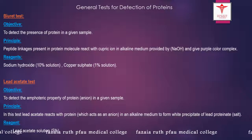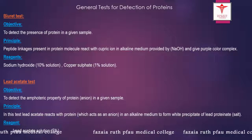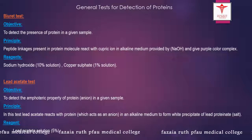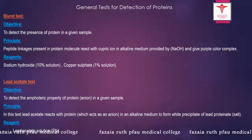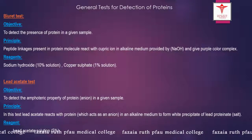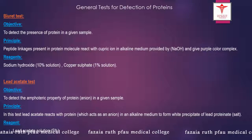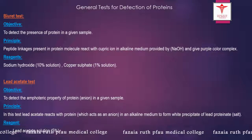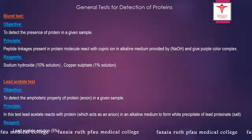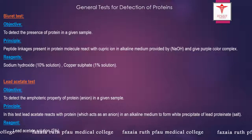Now we will begin with the general tests done for detection of proteins. The tests are divided into three main categories: number one is general tests to confirm the presence of proteins; number two is individual tests for specific proteins; and number three is tests for the presence of amino acids. Right now we are starting with general tests.